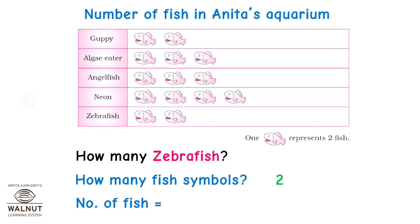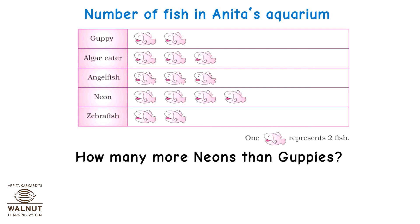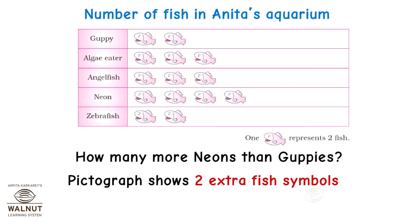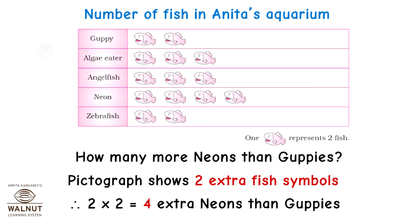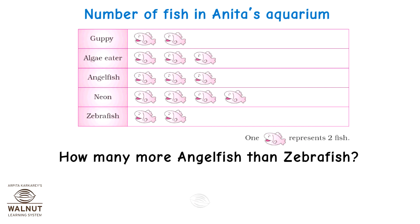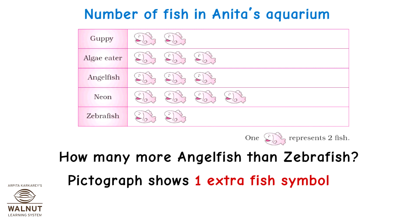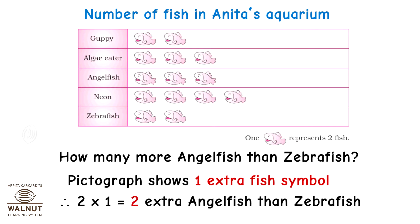The number of zebra fish in the aquarium is 2 into 2, which is equal to four. How many more neons than guppies? There are two fish symbols for guppy fish and four fish symbols for neon fish, so two extra fish symbols mean 2 into 2 equal to four extra neons than guppies. How many more angel fish than zebra fish? The pictograph shows one extra fish symbol for angel fish, so 2 into 1 equal to two extra angel fish than zebra fish.